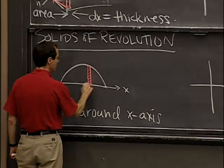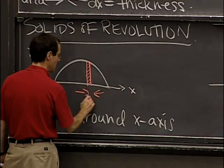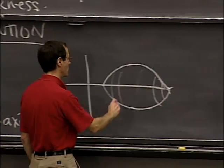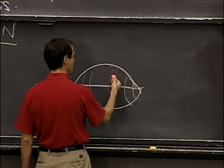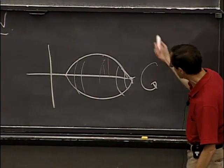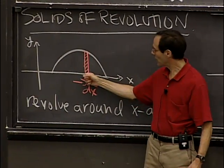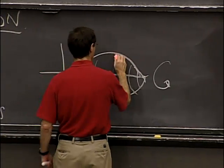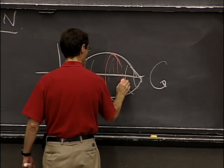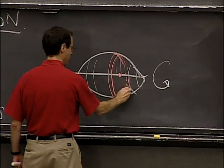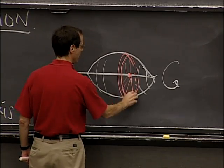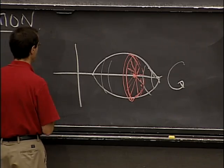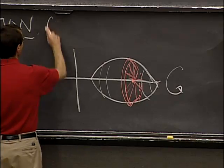The first step is to consider what a slice looks like. Again, it's going to have width dx. We consider what it looks like in the 3D picture — it starts out more or less like a thin strip, but then we sweep it around since we're revolving around the x-axis. Think of it as being on a hinge down on the x-axis; it swings around and traces out a disk. So the method I'm describing for figuring out the volume is called the method of disks.